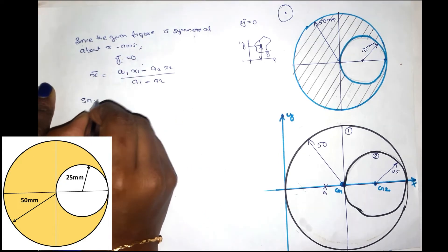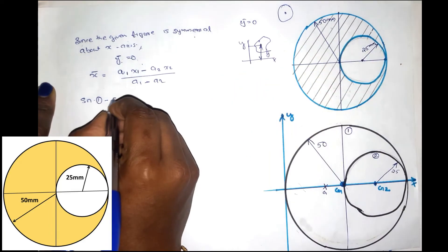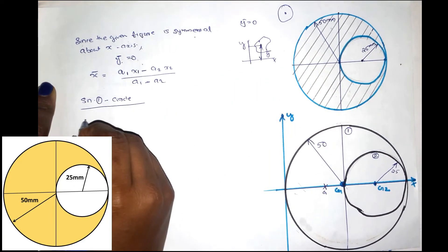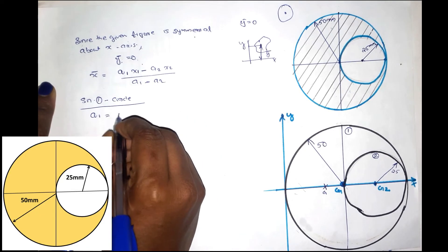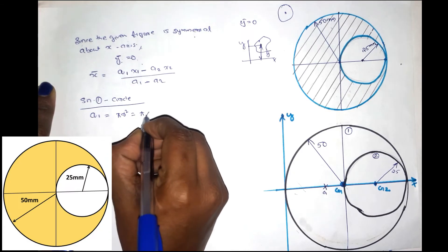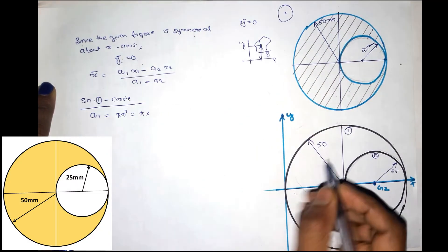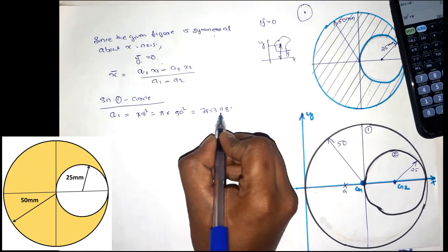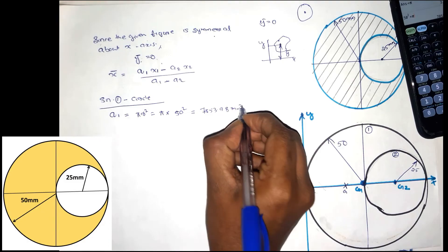First, we have section 1 — section 1 is the large circle. We compute area A1. The circle area is π·r² = π × 50² = 7853.98 mm².